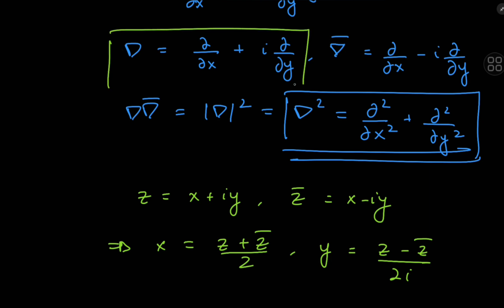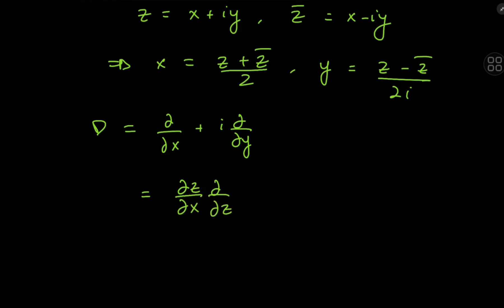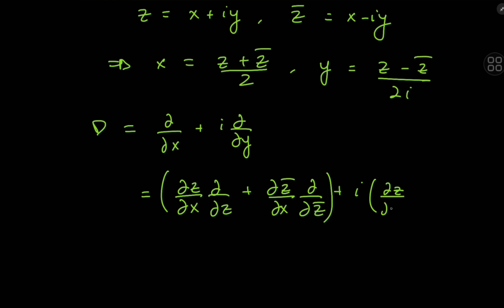What does this mean for the del operator in complex analysis? Del is partial by partial x plus i times partial by partial y. Using the multivariable chain rule in operator form, because x is a function of both z and z-bar, we have for the real part: partial z by partial x times partial by partial z, plus partial z-bar by partial x times partial by partial z-bar. For the imaginary part, we have a corresponding structure: partial z by partial y times partial by partial z, plus the same thing for the complex conjugate of z.